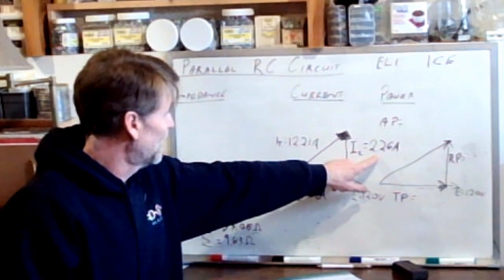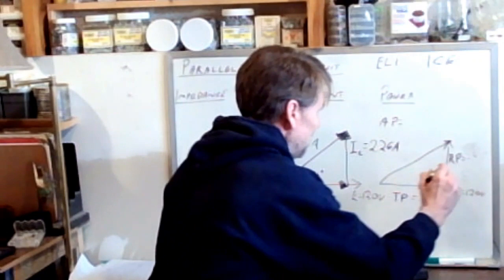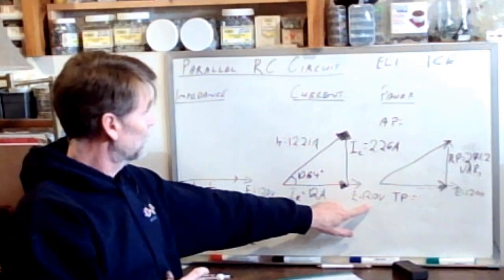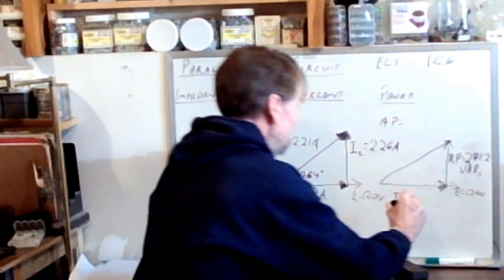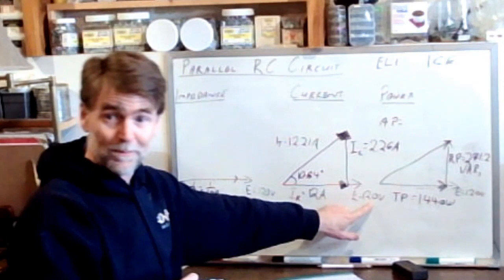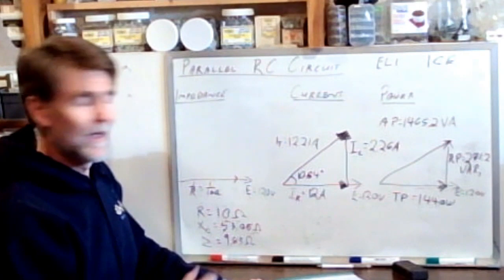So each one of these powers can be found by multiplying our voltage by the appropriate current. So if we take 120 volts multiplied by 2.26 amps, which is the current through the capacitor, that will give us our reactive power. So reactive power, 271.2 VARs, volts amps reactive. 120 volts multiplied by 12 amps will give us our true power, which is 1440 watts. And our apparent power will be a little bit bigger than that. It's 12.21 amps multiplied by the 120 volts gives us 1465.2 volt amps.